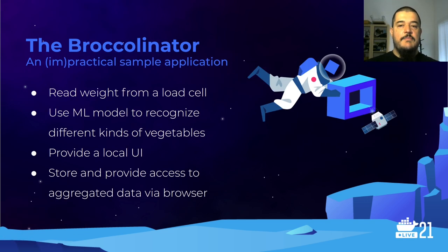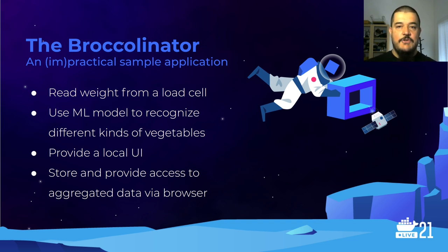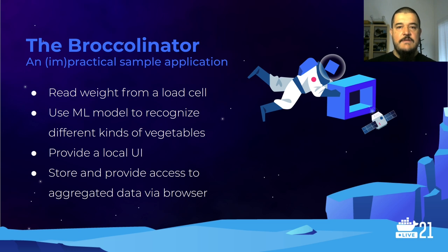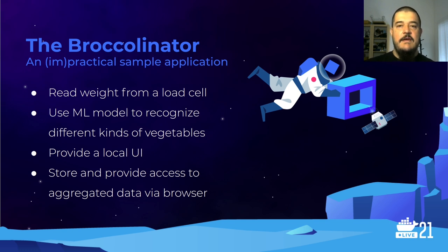To show how this can be implemented on an embedded device, I created a small demo called BroccoliMator. It's not a real device — developing a real device takes months or years — but the idea is to illustrate some of the challenges you may face when developing a real IoT system for production. The BroccoliMator lets you put vegetables on a scale to weigh them, and the system recognizes which kind of vegetable it is, collects the weight, and can print a label for sale.